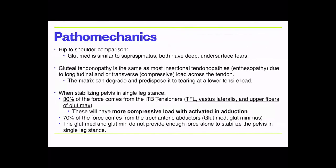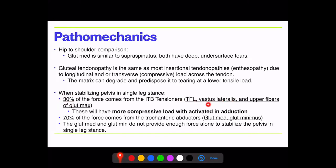Interestingly, during single-leg stance, the trochanteric abductors — glute med and glute min — should provide 70% of the stabilizing force, while the TFL, vastus lateralis, and upper glute max contribute 30%. If a patient exercises and feels activation in the outer thigh or TFL rather than the glute med and min, they may be using the wrong muscles. We'll talk about how to correct that ratio.